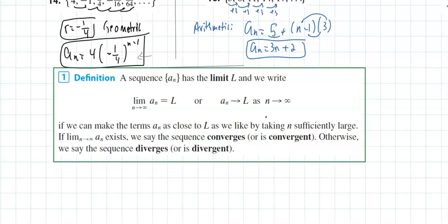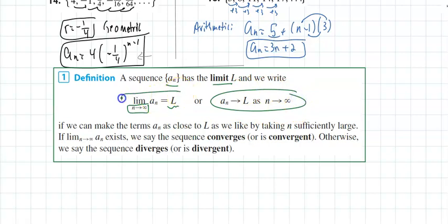Now, a sequence has a limit if we can write the limit as n approaches infinity of a_sub_n and get a finite value L — meaning we can make a_sub_n as close to L as we want by taking n sufficiently large. L'Hôpital's rule applies if we get 0/0 or infinity/infinity. If this limit exists as a finite number, we say the sequence converges; otherwise, the sequence diverges.